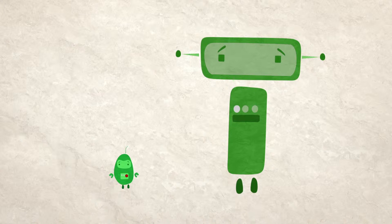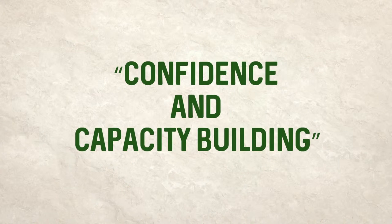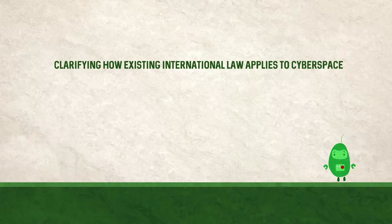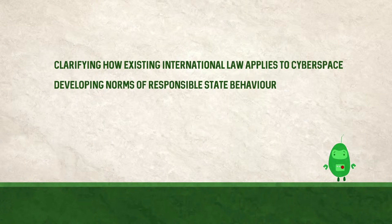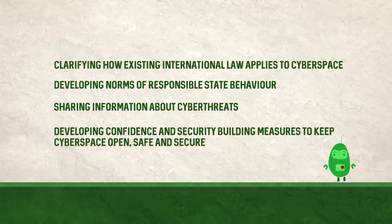The way that states try to get around this is through something called confidence and capacity building. What do we mean by this? It refers to measures taken by the international community, which include clarifying how existing international law applies to cyberspace, developing norms of responsible state behavior, sharing information about cyber threats, and developing confidence and security building measures to keep cyberspace open, safe, and secure.